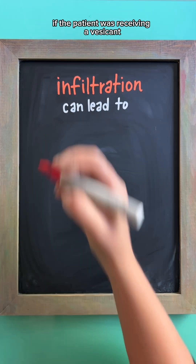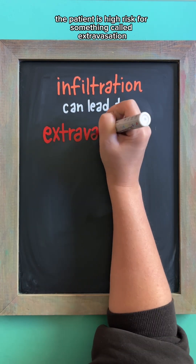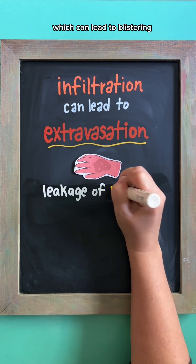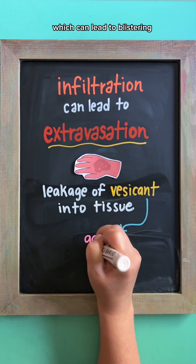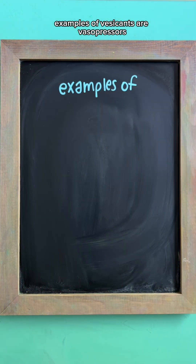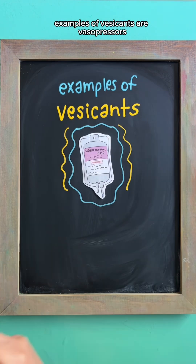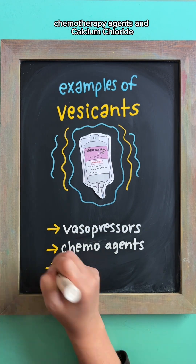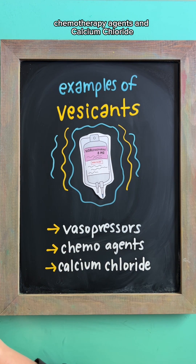And if the patient was receiving a vesicant, the patient is high risk for something called extravasation, which can lead to blistering, necrosis, and tissue sloughing. Examples of vesicants are vasopressors, chemotherapy agents, and calcium chloride.